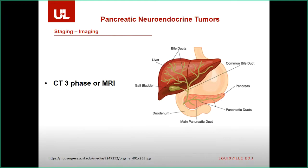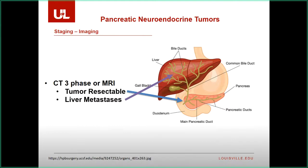EUS is more for image-guided biopsy and less helpful for staging or determining resectability. What we need for staging is a three-phase CT scan or MRI — a non-contrasted scan, then arterial and portal venous phases. This does two things: determines resectability, localizes the tumor, and shows its relationship to blood vessels. We're also looking for liver metastases, which is the most common site of metastatic disease both at diagnosis and recurrence after surgery.